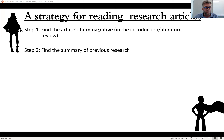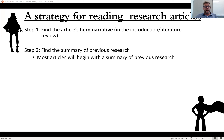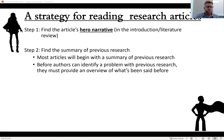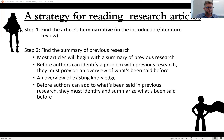A hero narrative always starts with 'here's a problem with current research — here's what we don't know and need to know.' So articles always start with a summary of previous research: here's what we do know. They can't say 'here's this gap that we need to fill' without first providing an overview of what has been done. So find the hero narrative, then work back to find that overview of existing knowledge, that summary of previous research. Before they can identify what hasn't been said, they need to say what has been said and done in research before.